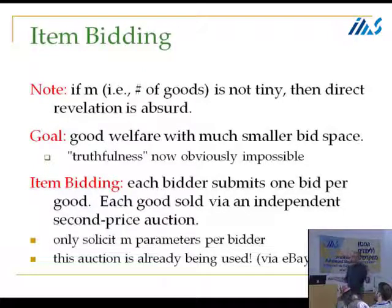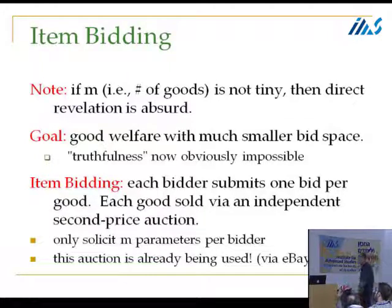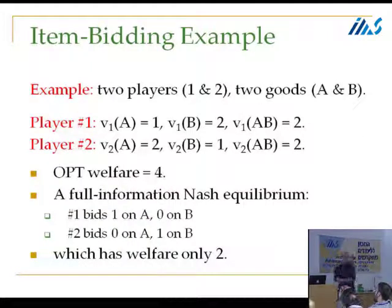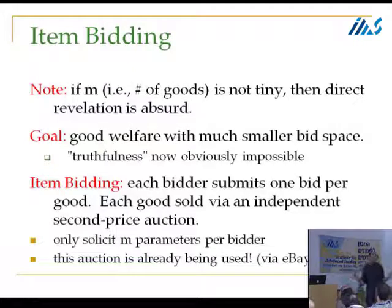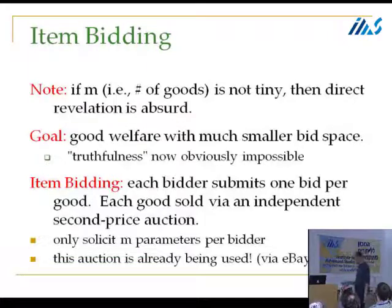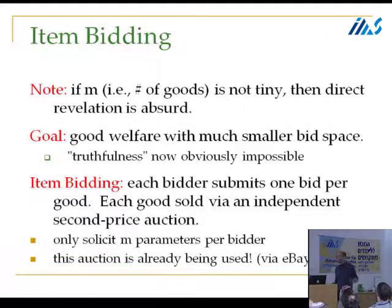Arguably this auction is effectively in use: if you're trying to buy a bunch of things at once on eBay, you are essentially forced into using a bunch of parallel Vickrey auctions. We're definitely not talking about truthful or dominant strategy mechanisms here — I haven't given bidders the space to tell me their full preferences. We're looking at equilibria and welfare loss at equilibria in the game induced by item bidding.